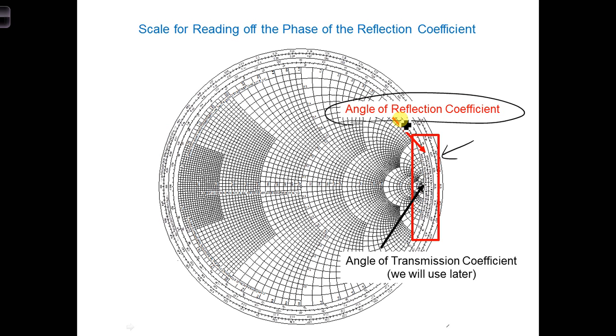Remember that the reflection coefficient at the load of the transmission line is written as the magnitude times e to the j theta r. So when we plot the load impedance, we can find the corresponding theta r at the load using the scale, the angle of reflection coefficient.